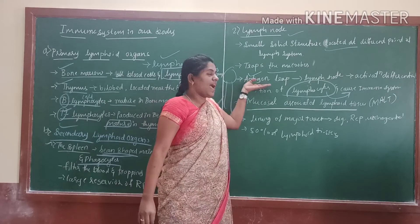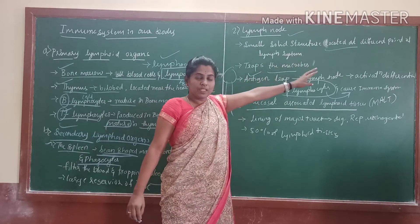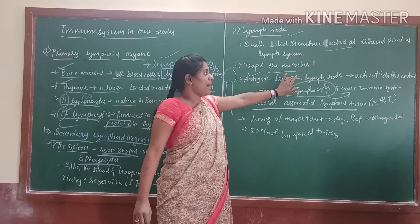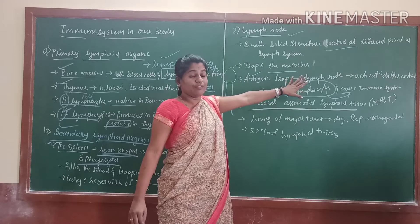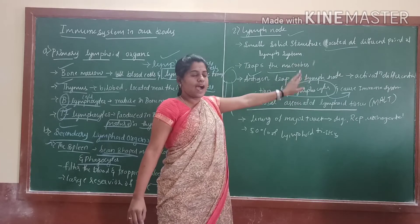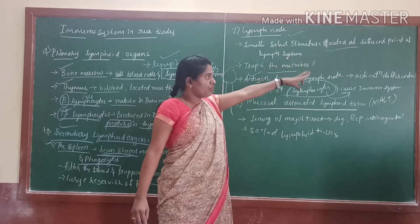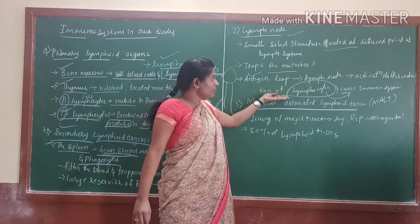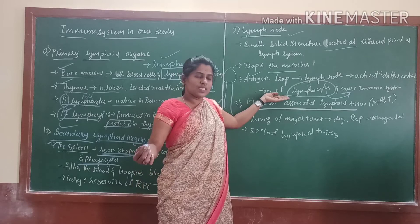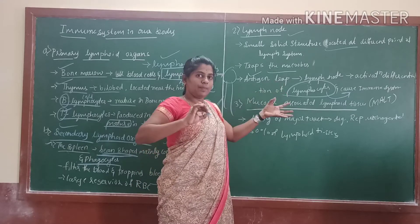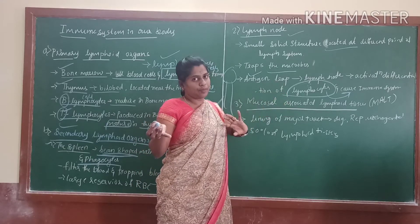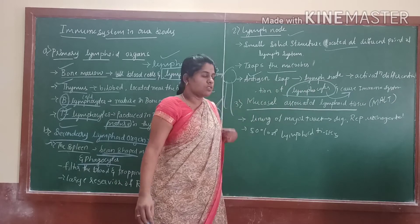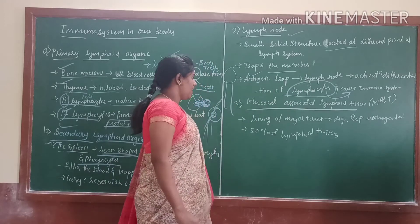First, the antigen is trapped by lymphoid cells or lymph nodes. After that it goes for activation and differentiation of lymph cells. Differentiation means they are cell mediated or antibody mediated. And next, it will cause the immune system response.